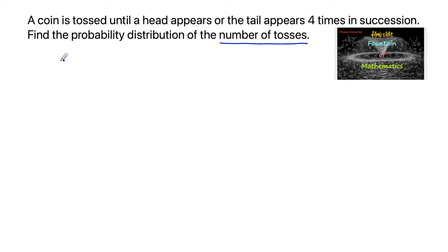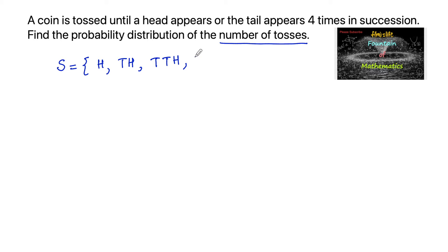We can consider the sample space as follows: if you toss the coin and get a head, you stop. If you get a tail, you toss again — if head, you stop. If tail again, toss once more — if head, stop. Then tail, tail, tail, head — stop. Or if you get four tails in succession, you also stop, as the problem states tail appears four times in succession.